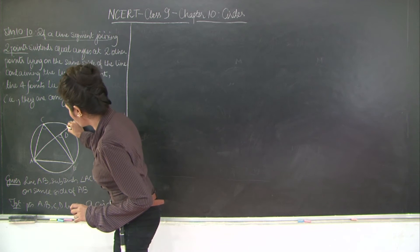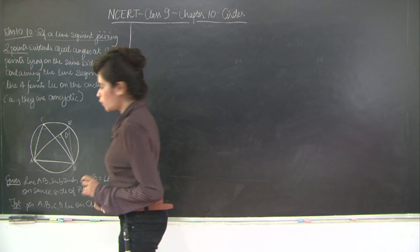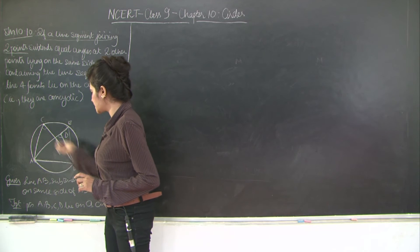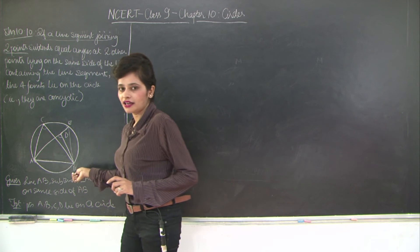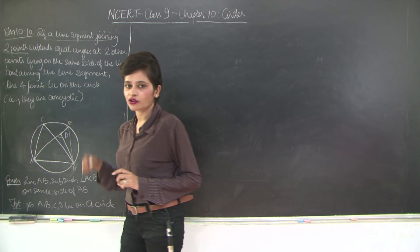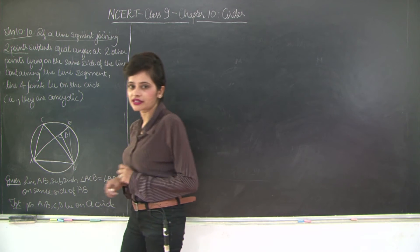So I am extending A, D to point E such that E lies on the circle on the same side of the segment. So now and if I join E to B, what do I get? I get two angles A, C, B and A, E, B subtended by the same segment of the circle or the same arc A, B of the circle.